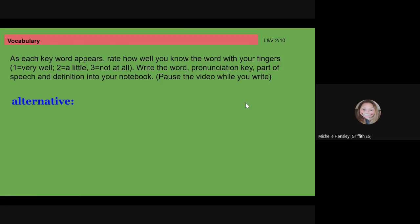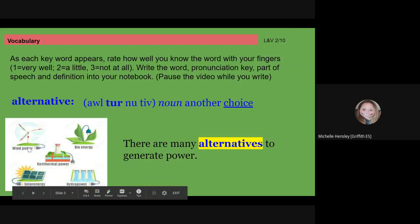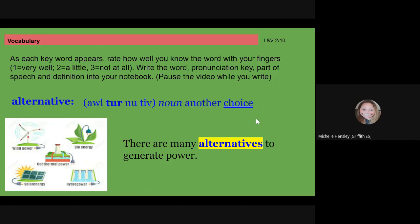All right, our first word: alternative. A-L-T-E-R-N-A-T-I-V-E. Alternative. How well do you know alternative? Give yourself a one, two, or three. Alternative—it's a noun, and it means another choice. Alternative, four syllables, a noun meaning another choice. You've got another option. There are many alternatives to generate power. We could come up with—you guys have seen the big wind turbines, there's wind power, sometimes we get plant energy from plants, sometimes from volcanic energy, solar energy, water energy, hydropower. Alternative just means that you have another choice. I know that's a long word to write down. Pause the video if you need. We're going to go ahead and go on.